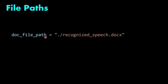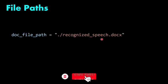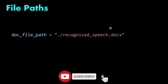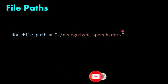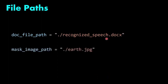Now the file paths: the first file path is the doc file path, which is 'recognized_speech.docx'. This is the file path used for calling and saving the text. The next file path is the mask image file path — I'm using an 'art' image as my mask.